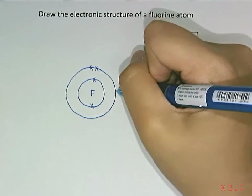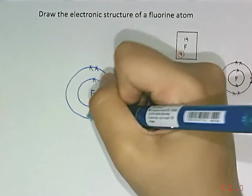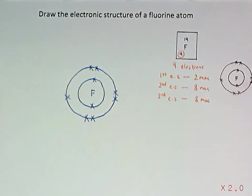So, 1, 2, 3, 4, 5, 6, and 7. So, this is how you draw the electronic structure of a fluorine atom.